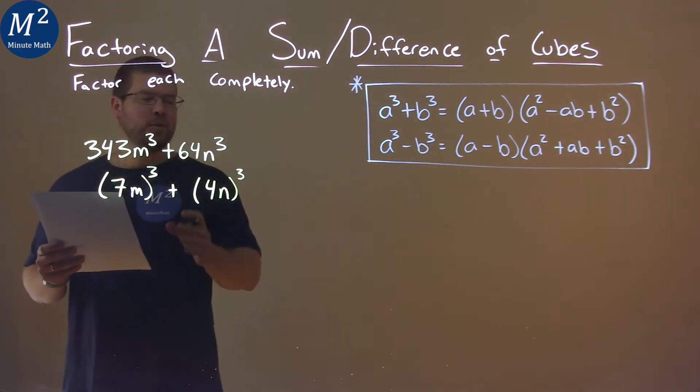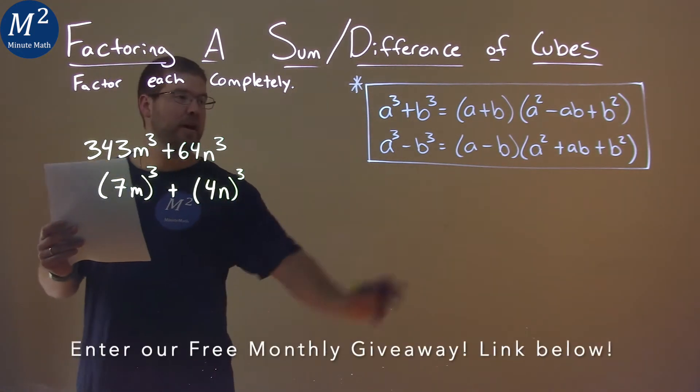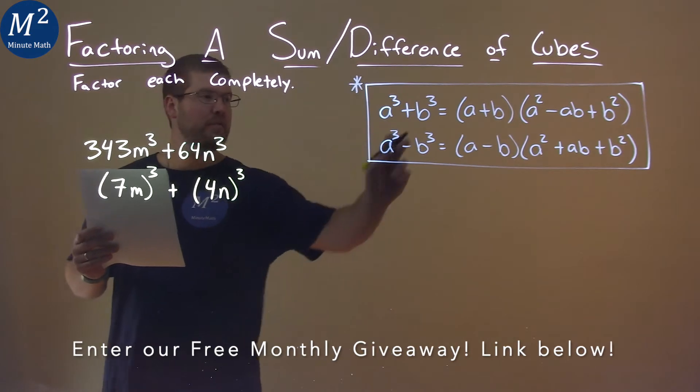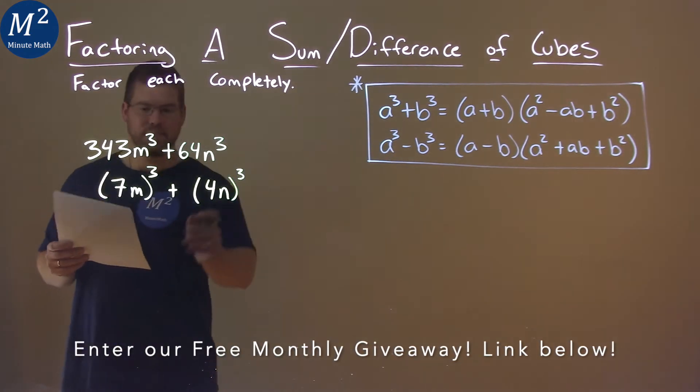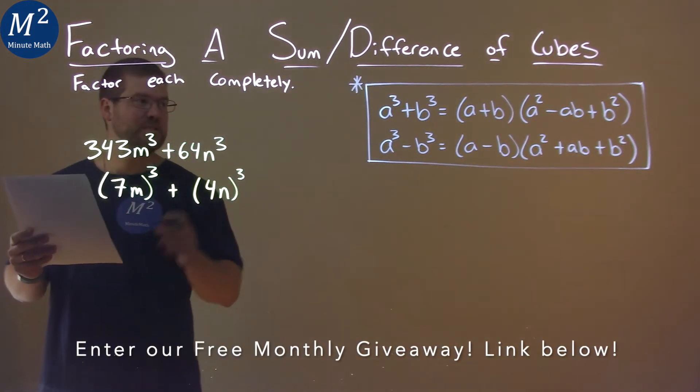So now we can use our formula. A value is 7m and our b value is 4n. And so now let's use the formula.